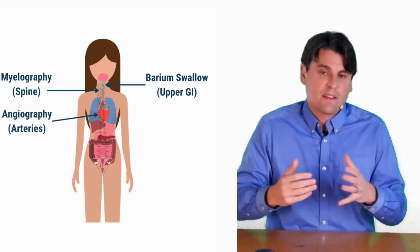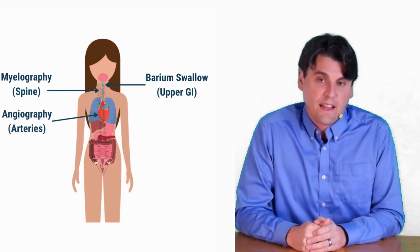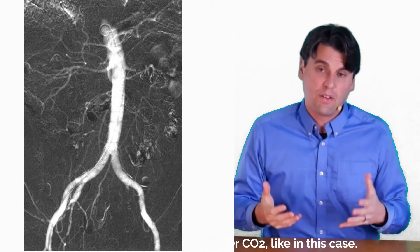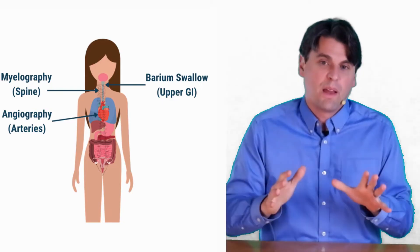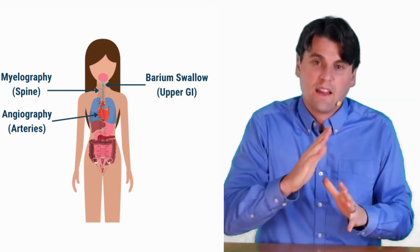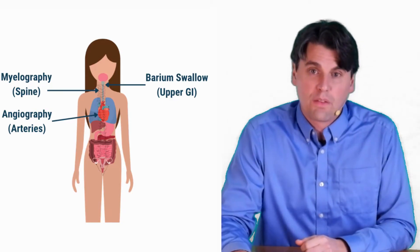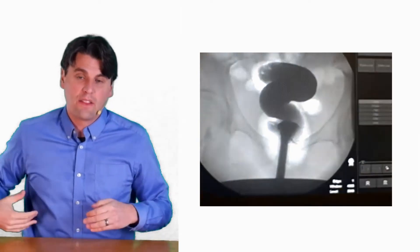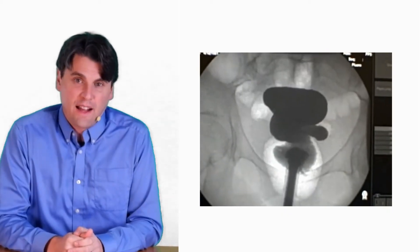And angiography, that's something where you're typically going to be injecting an iodinated contrast agent again so that the vessels will show up relatively bright. You'll be able to image those vessels and the contrast actually flowing through those vessels. And a barium enema can be used to look at the lower end of the digestive tract.